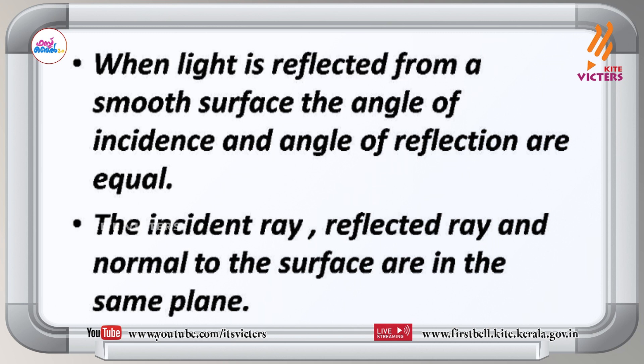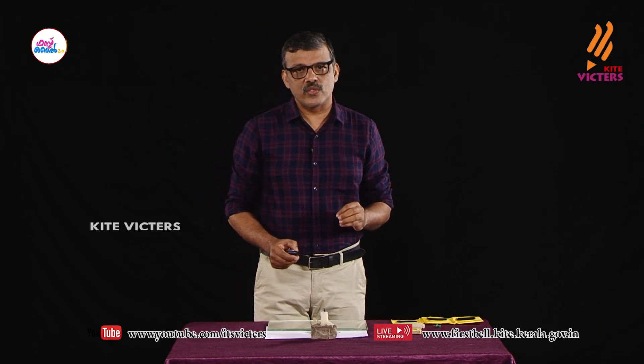Now we can state the laws of reflection. There are two parts. One: when light is reflected from a smooth surface, the angle of incidence and angle of reflection are equal. Two: the incident ray, reflected ray, and normal to the surface are in the same plane. These two parts together form the laws of reflection.